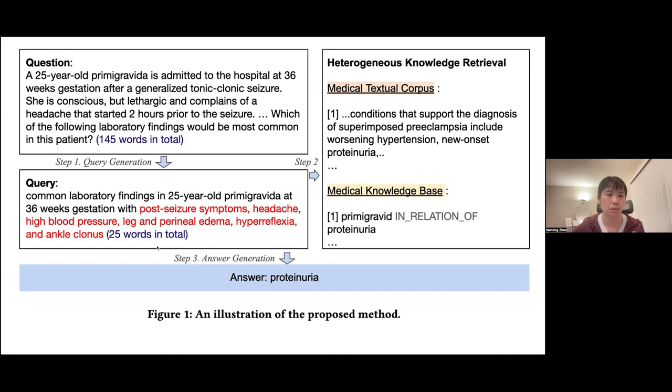Given this short query, the retriever can have a better sense of what's the most important part of the question to focus on. So we can retrieve more relevant knowledge sources. Given this query as the input to either dense retriever or sparse retriever, we can return the relevant passages from the textual corpus listed here. Here is one example of the retrieved passage. It's fluent in natural language. And for the knowledge base part, the returned medical triplet contains three things: the subject, the relation name, and the object.